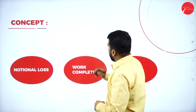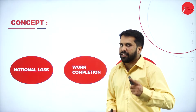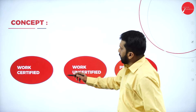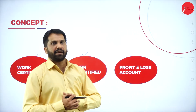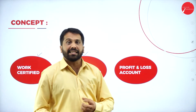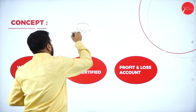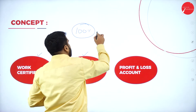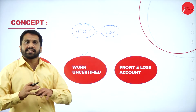Let's look at work certified and work uncertified. Just assume there is a construction contract. Almost 100% work has to be completed, and it is almost 3 years of work. In the first year, 70% work is completed.